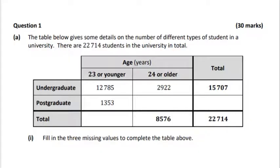First of all we need to subtract 15,707 from 22,714. We get the intermediate value here. Over here we're going to subtract the 2,922 from the value below and over here we add them up. So that's the table completed and we're going to use these values now in the next part.